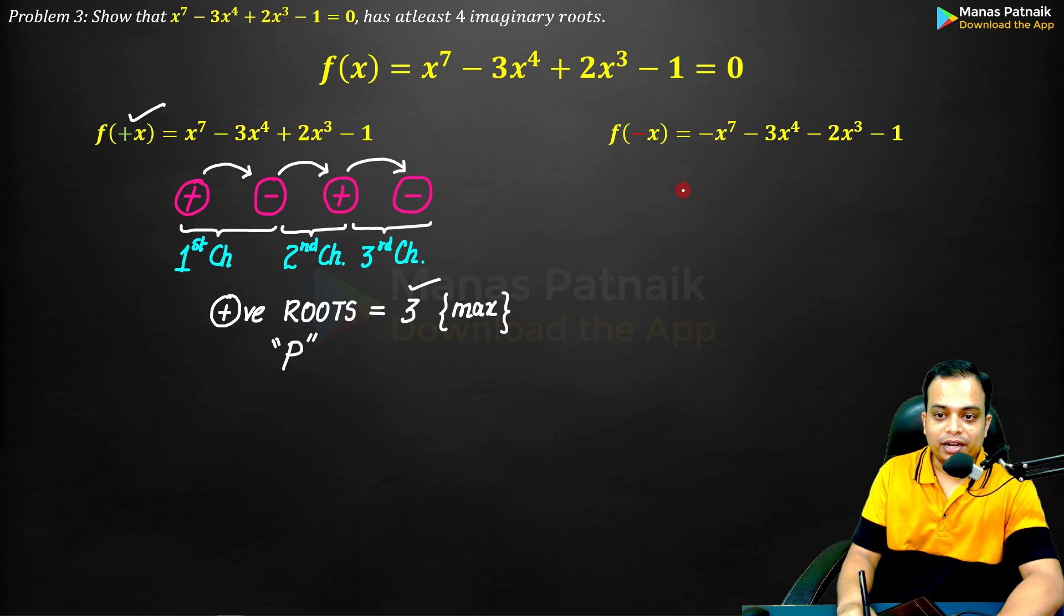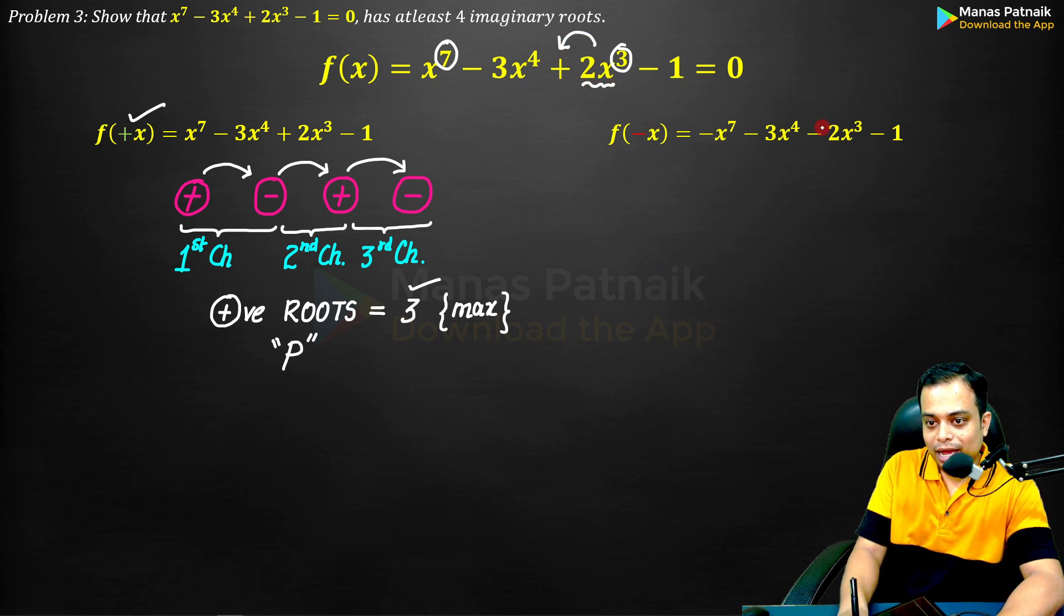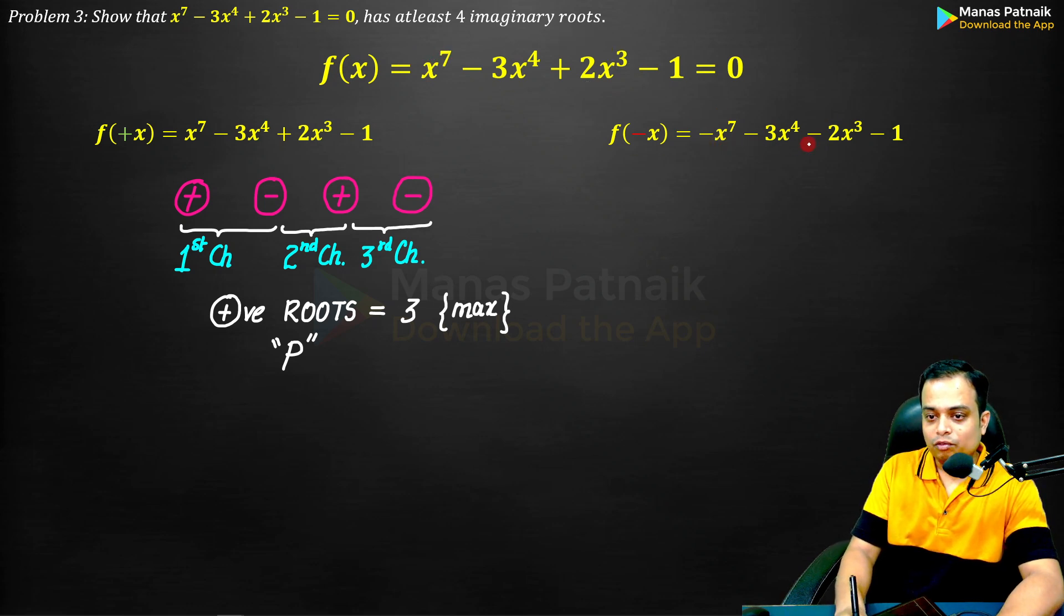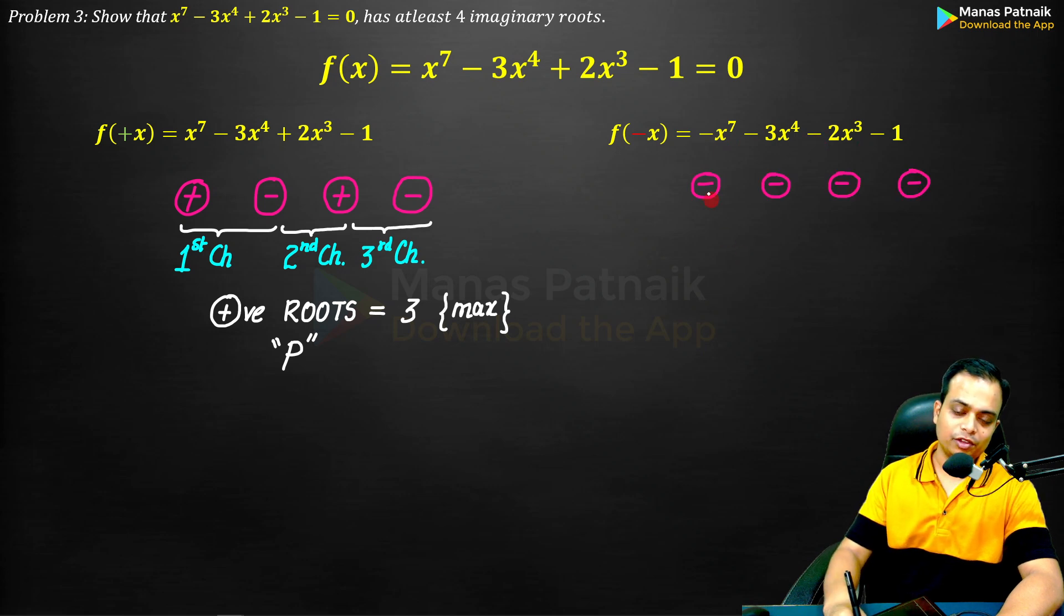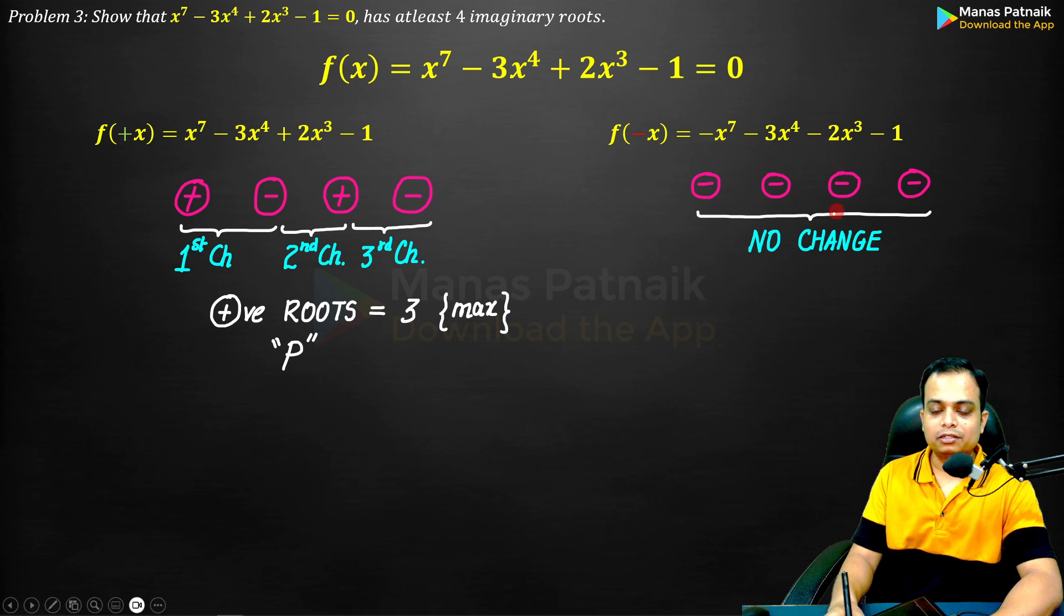Secondly, go for f(-x). When you put a negative value, these are the odd powers, the signs are going to change. This 2x^3 now has a negative sign, x^7 now has a negative sign. Arrange all these signs in proper order. We observe there are no changes, absolutely no changes, that means zero negative roots.